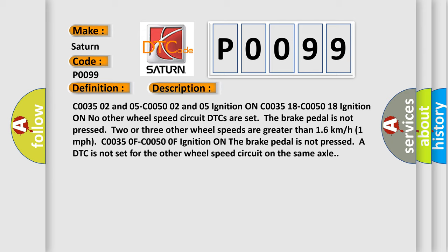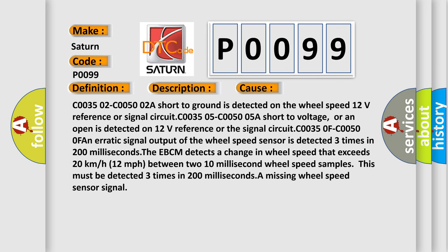This diagnostic error occurs most often in these cases. C0035 02, C0050 02, a short to ground is detected on the wheel speed 12 volts reference or signal circuit. C0035 05, C0050 05, a short to voltage or an open is detected on 12 volts reference or the signal circuit. C00350F, C00500F, an erratic signal output of the wheel speed sensor is detected three times in 200 milliseconds. The EBCM detects a change in wheel speed that exceeds 20 kilometers per hour, 12 miles per hour, between two 10 millisecond wheel speed samples. This must be detected three times in 200 milliseconds. A missing wheel speed sensor signal.